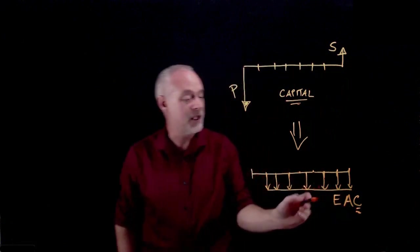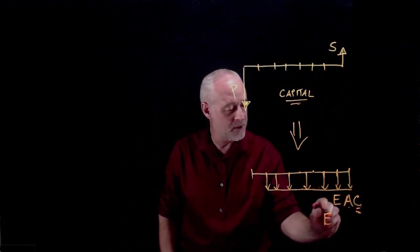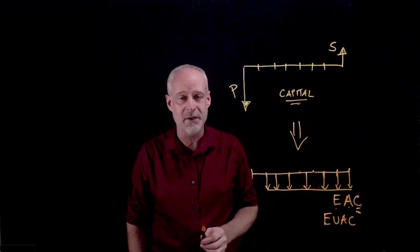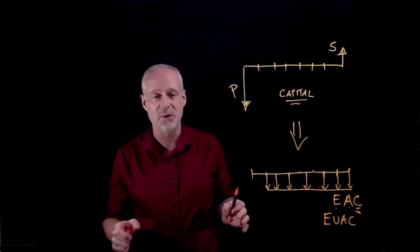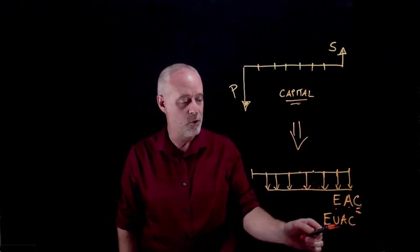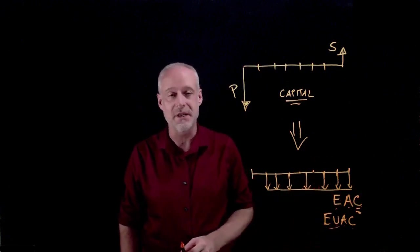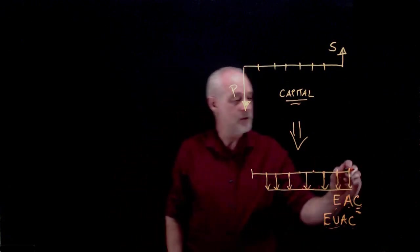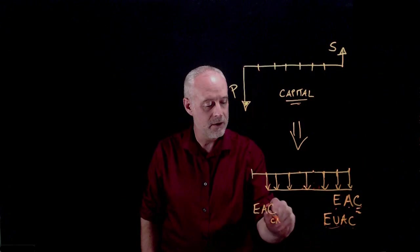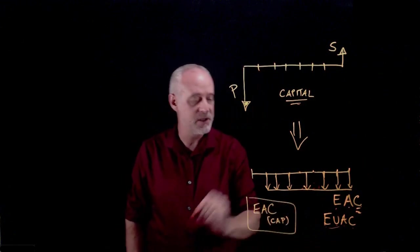The EAC stands for the equivalent annual cost. You'll also sometimes see it written like this, EUAC. Some textbooks use EUAC, some use EAC. Don't be alarmed if on your quiz or your final exam, if you see an EUAC, it's just the same. This stands for equivalent uniform annual cost. The U is a little bit redundant in my opinion, so I tend to prefer just EAC, equivalent annual cost. And we call this the EAC capital. So we'll give it a little subscript cap. So this is the EAC capital. Not the end of the story, though.